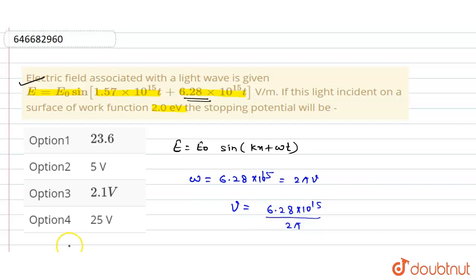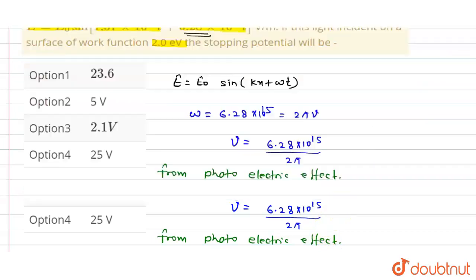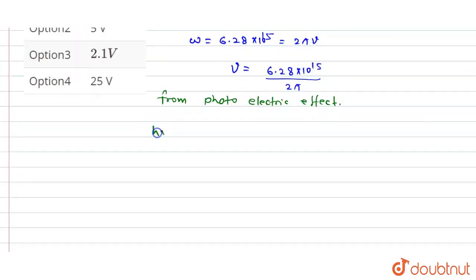Now we know that from the photoelectric effect, the value of hν can be written as equal to φ₀, the work function, plus eVₛ, where Vₛ is the stopping potential.